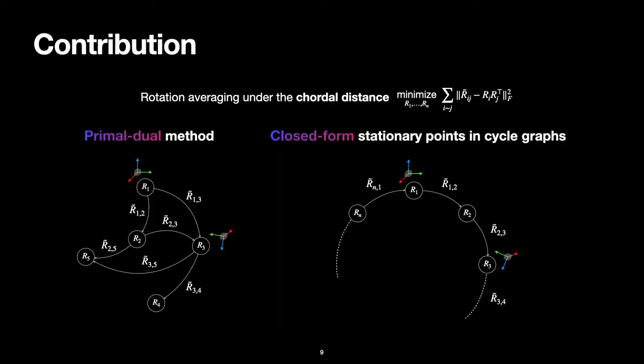In our paper, we provide a two-fold contribution: one being a primal-dual method for the general rotation averaging problem, and then a closed-form solution in the case of cycle graphs for the stationary points, always considering the chordal distance between rotations.